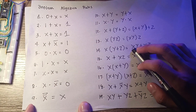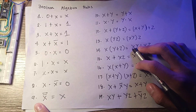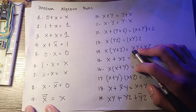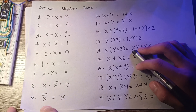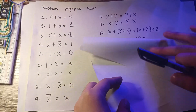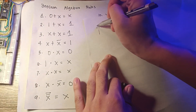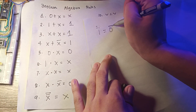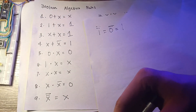An example of these rules: rule 9 states that double complementation of a variable results in the original variable. For example, if x is 1 and we double complement it, then it equals 0. And if we complement 0, it equals 1. That is rule 9.